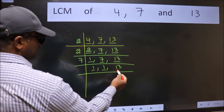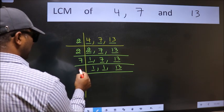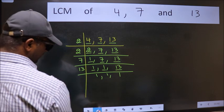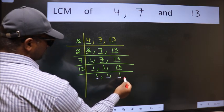So focus on the next number, 13. 13 is a prime number, so 13 divided by 13 is 1. Now we got 1 in all three places.